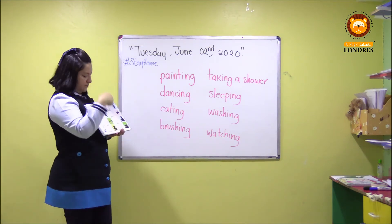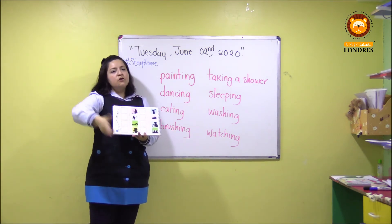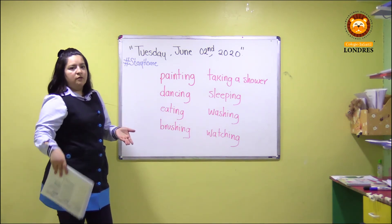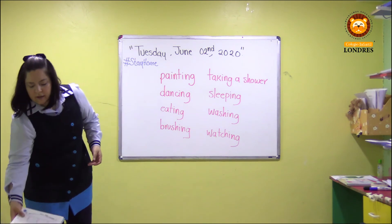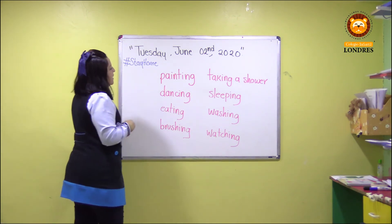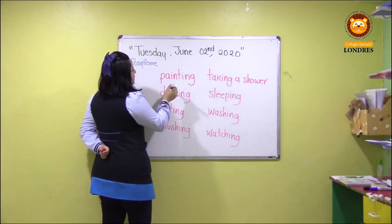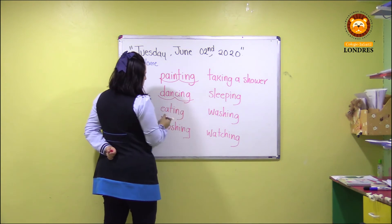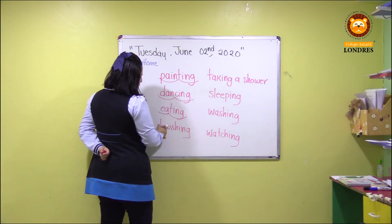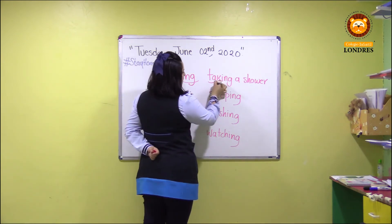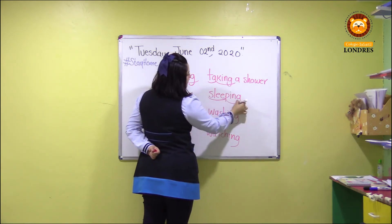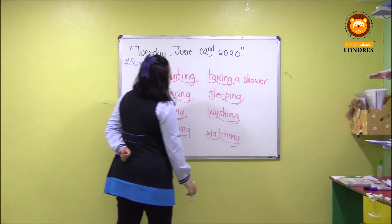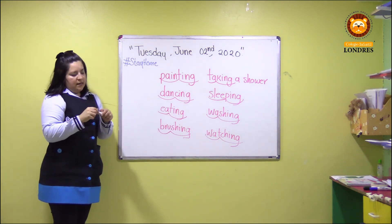Después de que terminen de colocar los stickers, nos vamos a ir a nuestra libreta y así como yo lo acabo de apuntar en el pizarrón, ustedes van a copiar los verbos y los vamos a dividir de acuerdo a las sílabas como estuvimos trabajando, ¿vale? Tenemos painting, dancing, eating, brushing, taking, sleeping, washing, watching. ¿Se acuerdan que lo trabajamos con la canción de Queen?